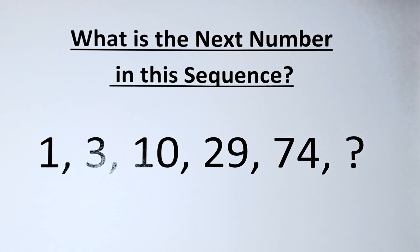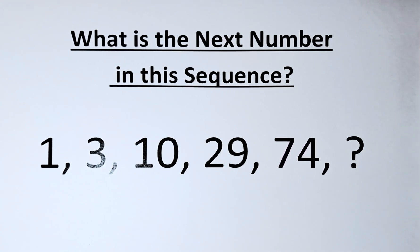This puzzle is quite straightforward. You need to find the next number after 74. If you look at the numbers 1, 3, 10, 29, 74, it looks more like a multiplication rather than addition. And we may even add a square or a cube to the answer. So without further ado, let's solve this problem.